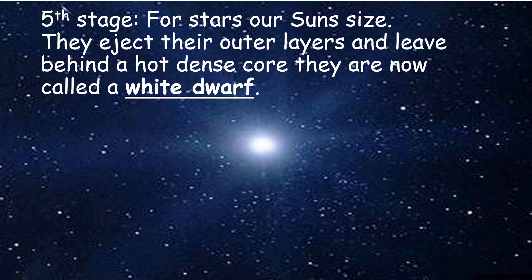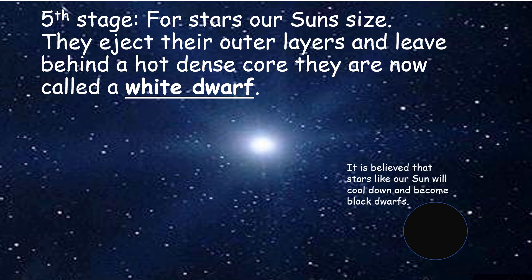The fifth stage for stars our sun's size: they now eject their outer layers and leave behind a dense core. They are now called a white dwarf. Although only theoretical at this time, it is believed that stars like our sun, when in the white dwarf phase, will cool down and stop emitting light altogether. At this point they will become black dwarfs. However, the universe is not old enough yet for any of its stars to have reached the black dwarf phase.